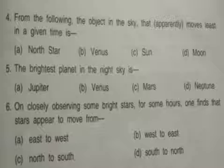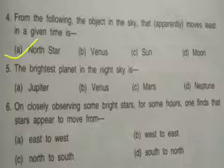Fourth: From the following, the object in the sky that apparently moves least in a given time is — options are: north star, Venus, sun, moon. The correct option is north star.